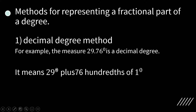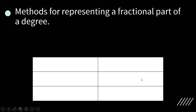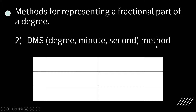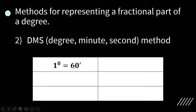It means 29 degrees plus 0.76 of 1 degree. The second is the DMS method, which stands for degree, minute, second. In DMS, 1 degree is subdivided into 60 equal parts called minutes. So 1 degree is equal to 60 minutes, or in fraction, that is 1 degree over 60.